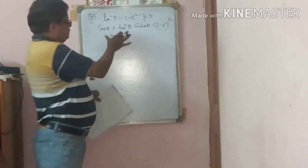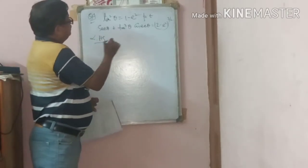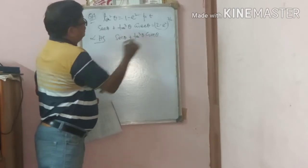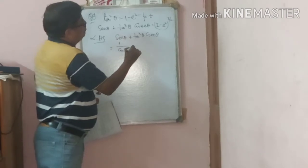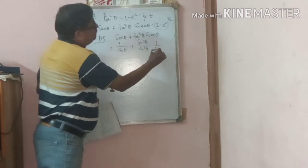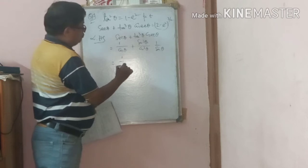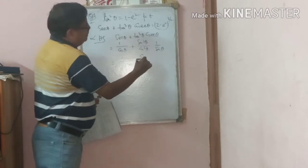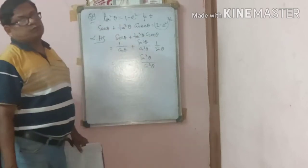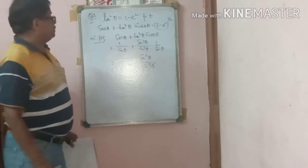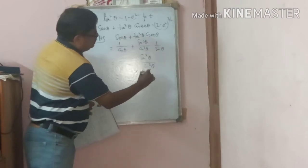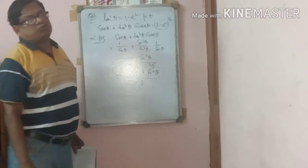Start with the left-hand side: secθ + tan³θ · cosecθ = 1/cosθ + (sin³θ/cos³θ)·(1/sinθ) = 1/cosθ + sin²θ/cos³θ. Taking LCM cos³θ: (cos²θ + sin²θ) / cos³θ = 1/cos³θ = sec³θ.